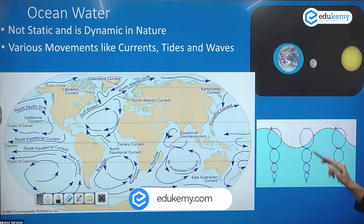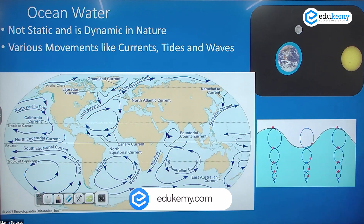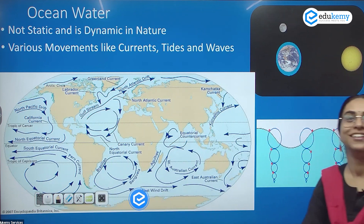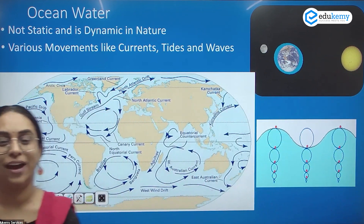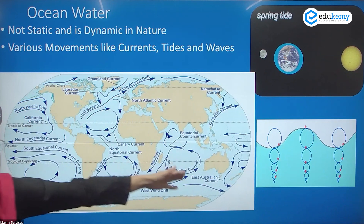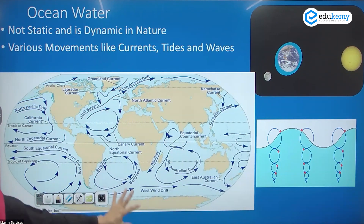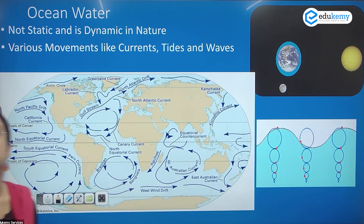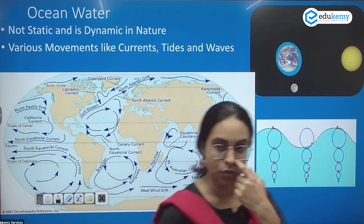we have sea waves — like at Goa beaches — and we also have tides. So the ocean water is dynamic: we have waves in the oceans, we have currents in the ocean, and we also have tides in the ocean.